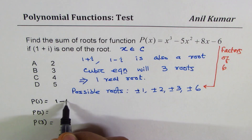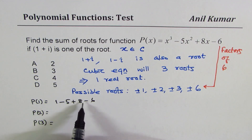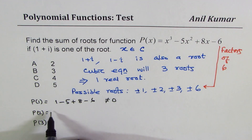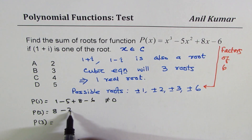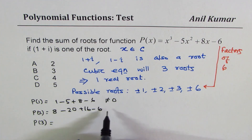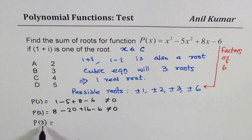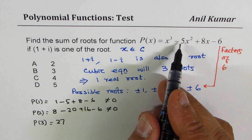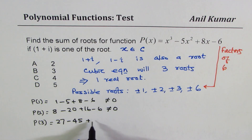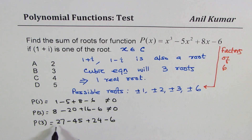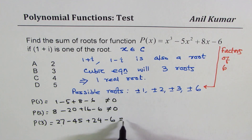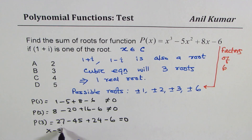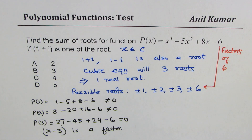If I substitute 1: I get 1 - 5 + 8 - 6, which is 9 - 11, not equal to 0. If I substitute 2: 8 - 20 + 16 - 6, that gives 24 - 26, also not equal to 0. If I substitute 3: I get 27 - 45 + 24 - 6, which adds up to 51 - 51 = 0. So x - 3 is a factor, meaning the third root is x = 3.